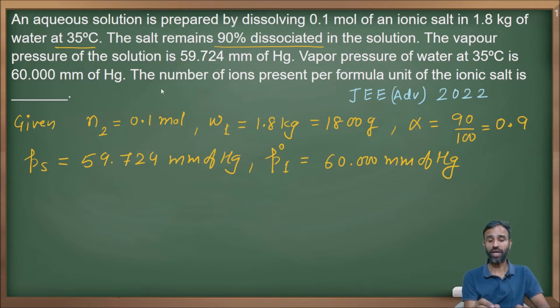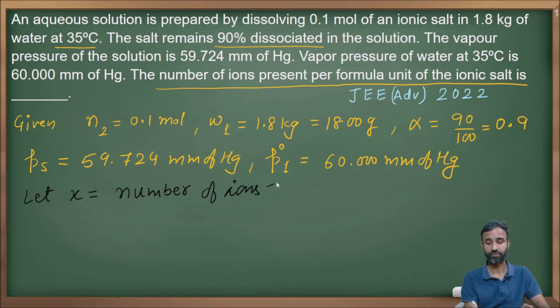We have to calculate the number of ions present per formula unit of the ionic salt. Let us take x as the number of ions present per formula unit of the ionic salt.